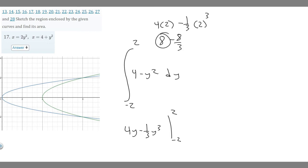We can rewrite 8 as 24/3 so we can subtract: 24/3 - 8/3 = 16/3. So when we plug in 2, we get 16/3.